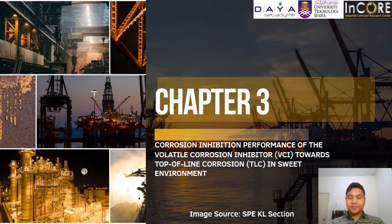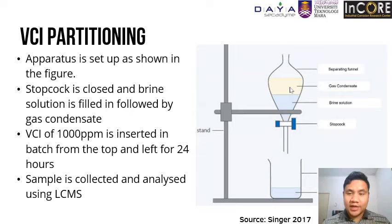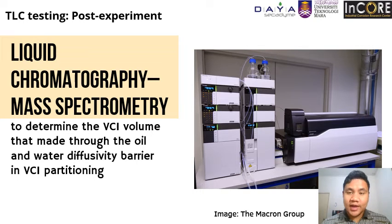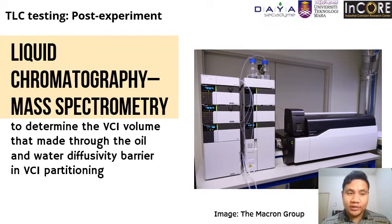For Chapter 3 methodology — for the VCI partitioning test, the apparatus are set up as shown in the image on the right. After setup is done, VCI dosing of 1000 ppm is inserted in the batch and left for 24 hours. Sampling is done by opening the stopcock. The sample is then analysed by LC-MS, where residual volume and VCI efficiency are determined. The collected VCI residual indicates the VCI that successfully passed through the diffusion barrier of the oil and water phase.